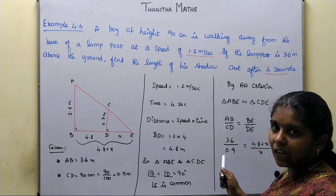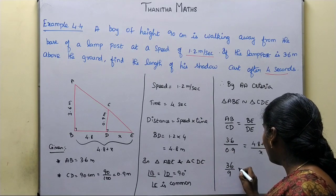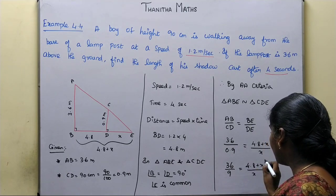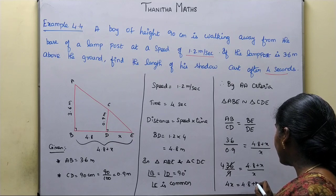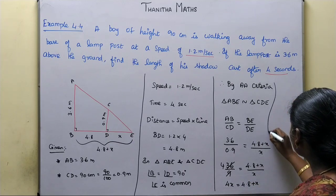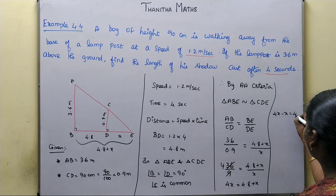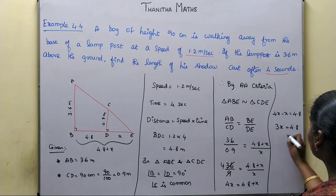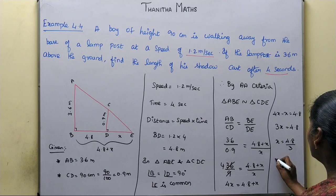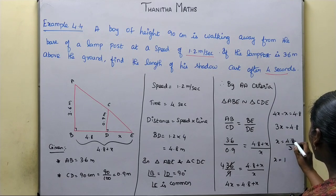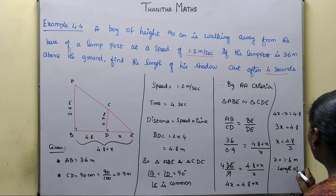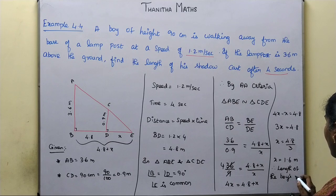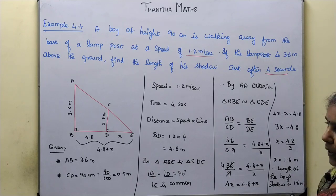Simplifying 3.6 by 0.9 gives 4. So 4 equals 4.8 plus x divided by x, which gives 4x equals 4.8 plus x. Therefore 4x minus x equals 4.8, that is 3x equals 4.8, so x equals 4.8 divided by 3, which equals 1.6 meters. Therefore, the length of the boy's shadow is 1.6 meters.